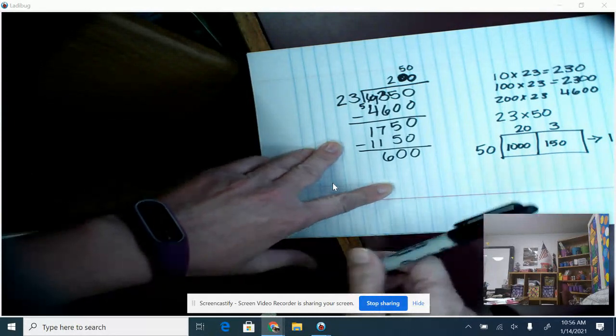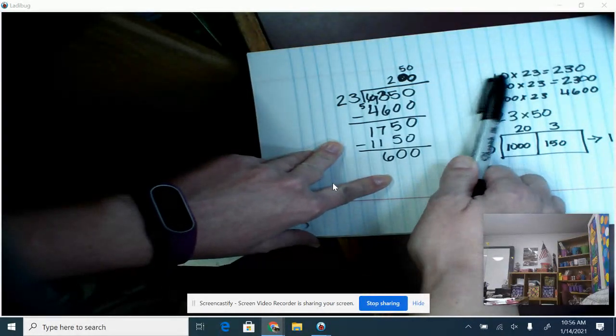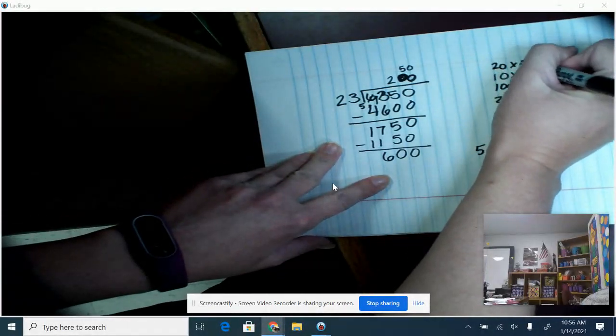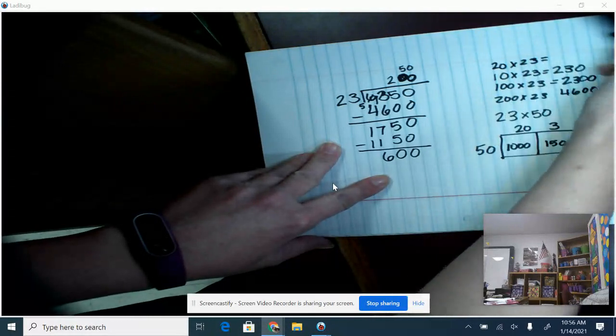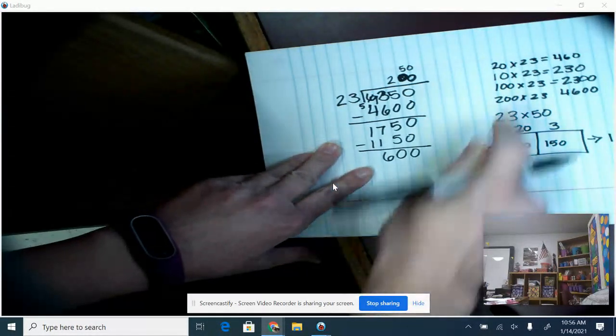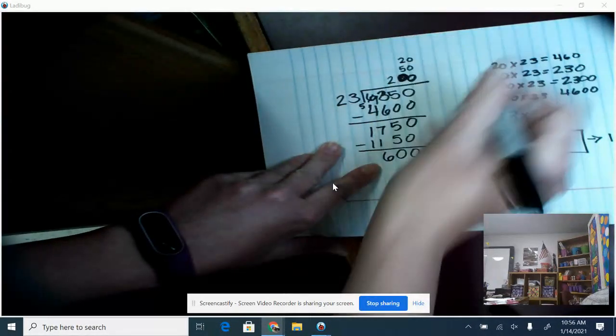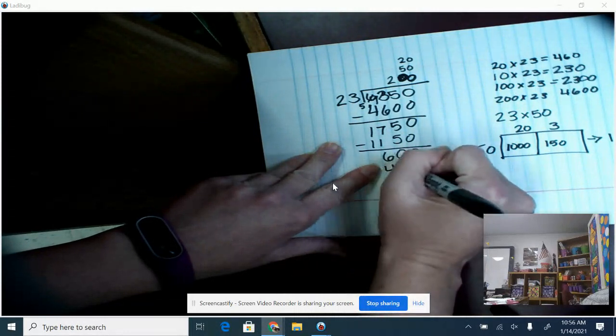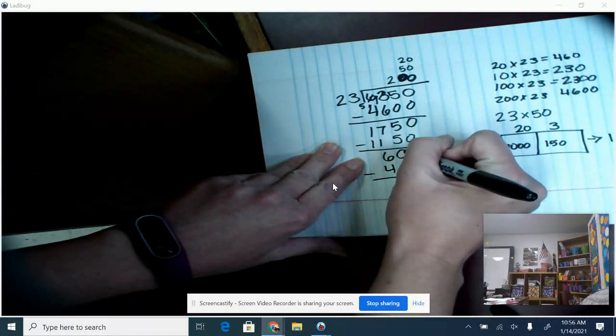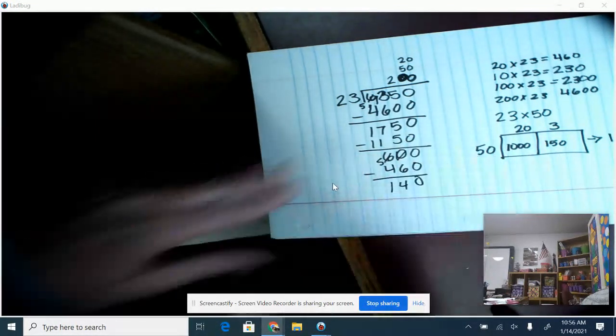And so now I can kind of come back up here and think about 10 again, since 10 times 23 is 230. If I did 20 times 23, that's going to give me 460. So I think that's a good place to start again. So 20 times 23 gives me 460. Then I have to do my regrouping again. So now I've got 140.